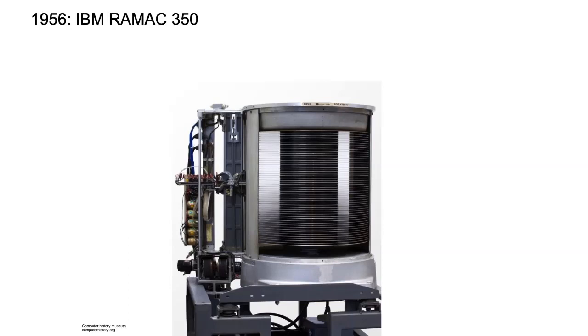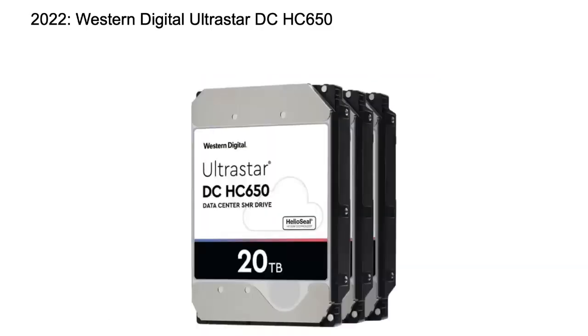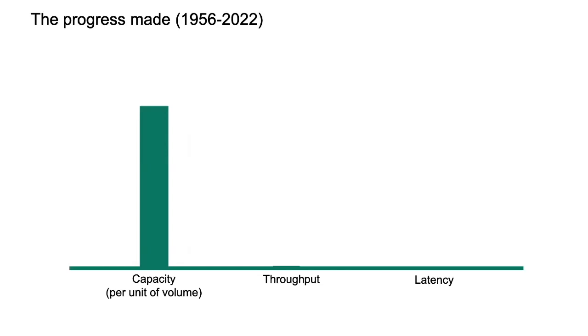The main driver was that if you look at what happened in 70 years, we had this absolutely huge hard drive of 1 meter 50 diameter that barely stored 5 megabytes. Today we can store 20 terabytes in this little volume. The capacity per unit of volume increased by a factor of 200 billion.